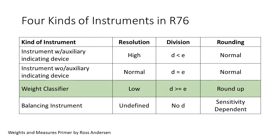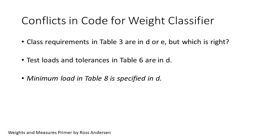The next case study is the weight classifier. These are low-resolution instruments with D typically larger than E and often much larger. The other important distinction is the rounding where these instruments round up as opposed to the normal half up, half down rounding. We find three of the same conflicts described earlier for the balancing instruments: confusion relating to Table 3 accuracy class, Table 6 tolerances, and Table 8 minimum load. In Table 3 and 6, we are taught to use E, but I submit there is no direction in the code to support this.